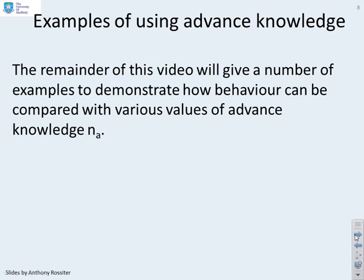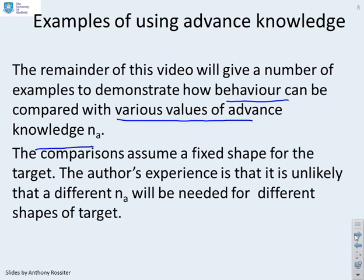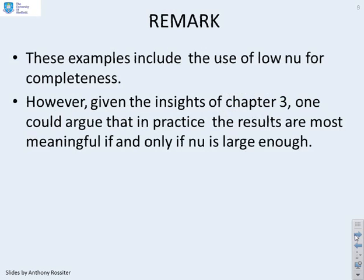So what we're trying to do is get you to think pragmatically, think a bit like an engineer. Now we're going to do some examples to show what you might do in practice. The remainder of this video will give a number of examples to demonstrate how behavior can be compared with various values of advanced knowledge NA. The comparisons assume a fixed shape for the target, though in my experience it's unlikely that a different NA will be needed for different shapes of target. These examples include the use of low Nu for completeness because that's quite common for many applications.